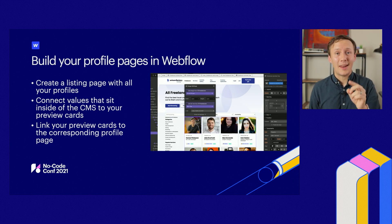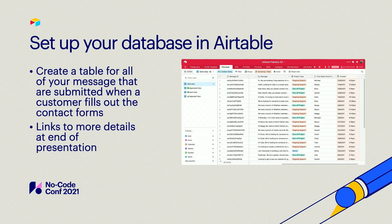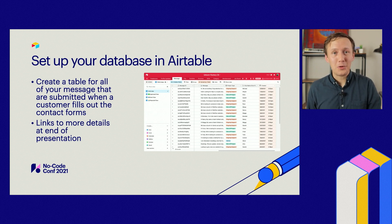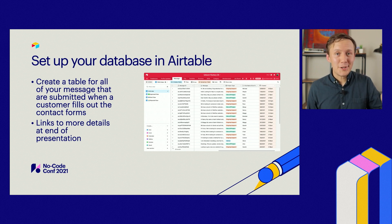Next, jump into Airtable and create a database that mirrors everything you just worked on. Once you've got your profile table set up in Airtable, also set up a table for all your different messages. Look at what fields you added to your contact form and create a new table called 'messages' with a corresponding field for every one of those fields — the client's email address, phone number, and the message they submitted. That will allow you to send information submitted from Webflow to Airtable.